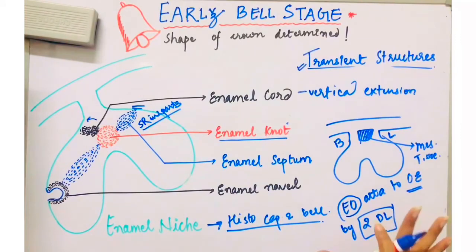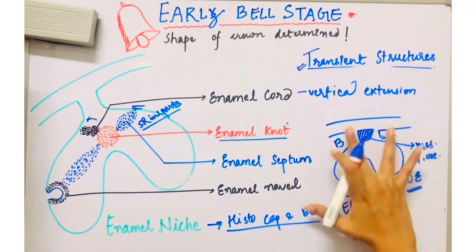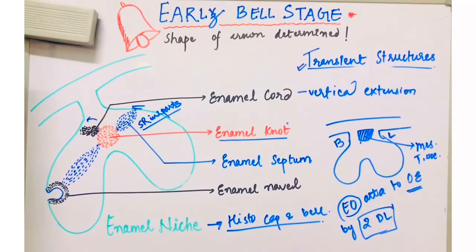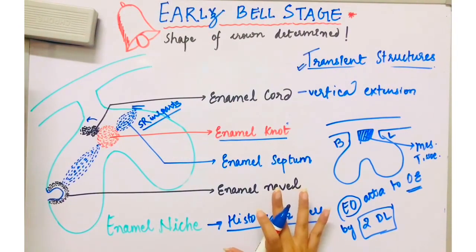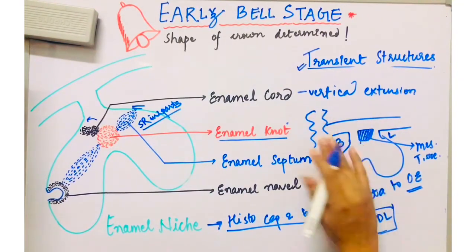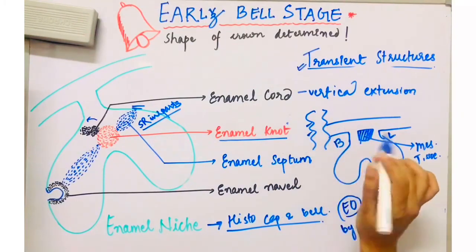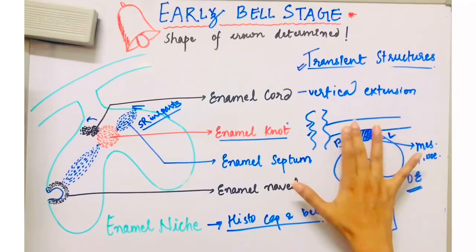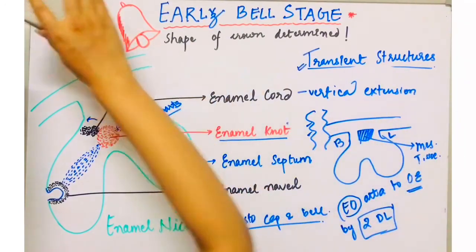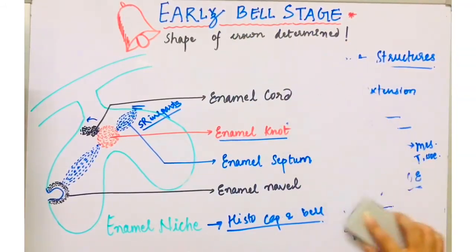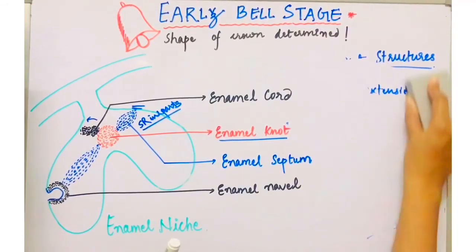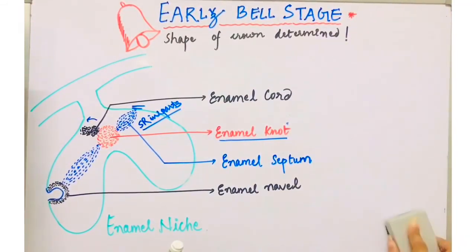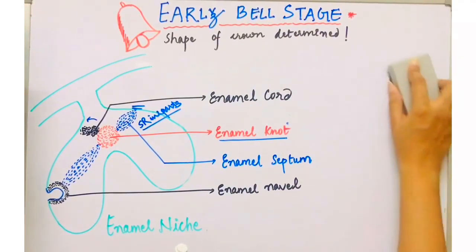This is just a transient appearance; the enamel organ is not truly attached by two extensions — it is just an appearance. This is seen because the dental lamina is a sheet of cells with irregular depressions. Because of this, it sometimes appears in histopathological sections that the single enamel organ is attached to the oral epithelium by two dental lamina extensions, one buccal and one lingual. This completes the transient structures seen in the bell stage and cap stage.